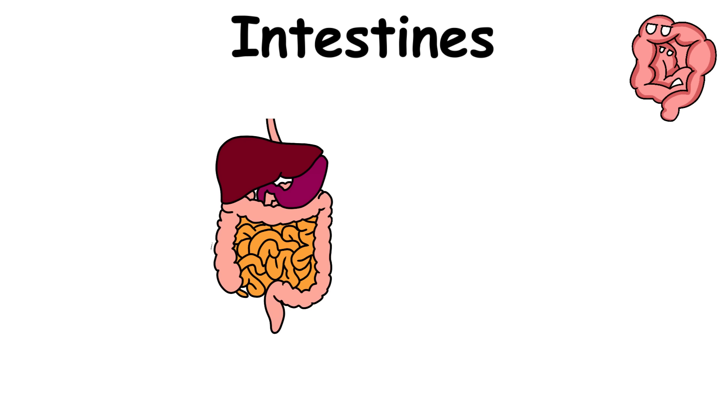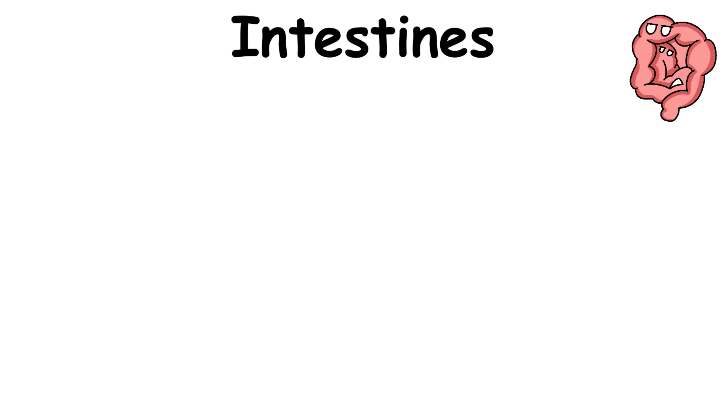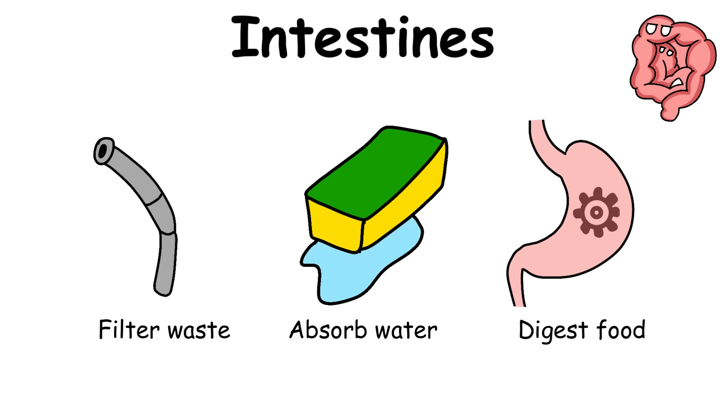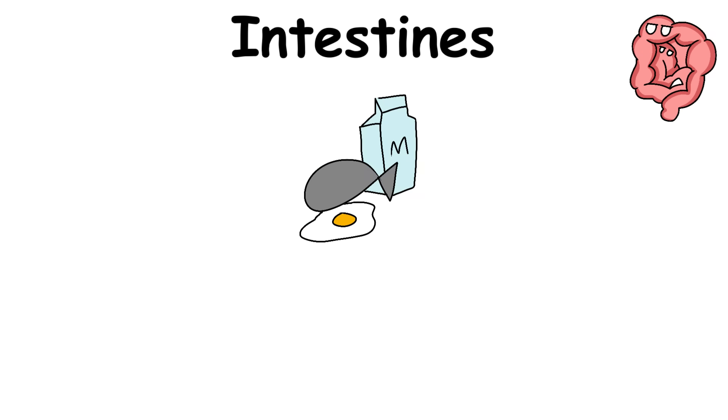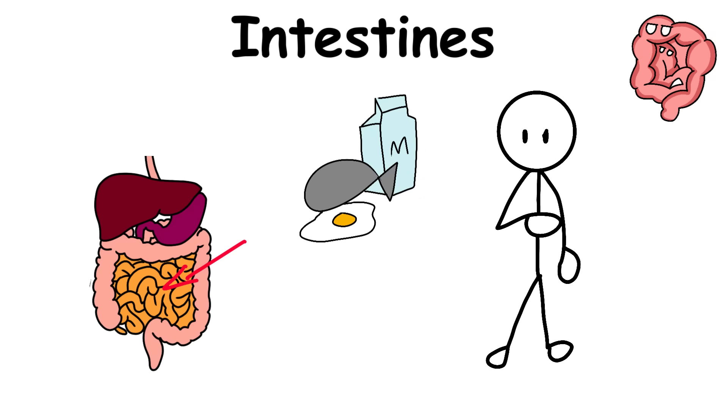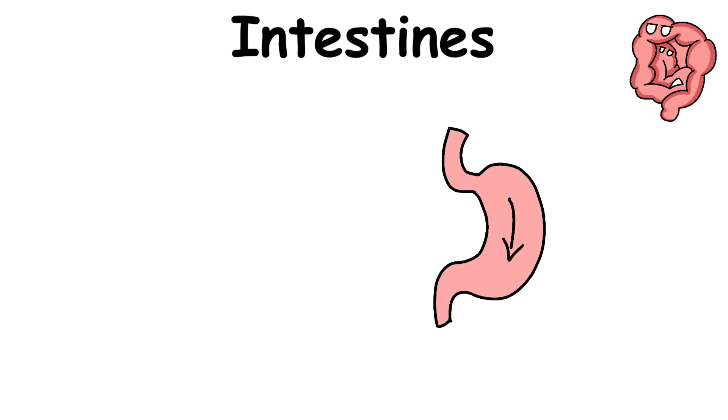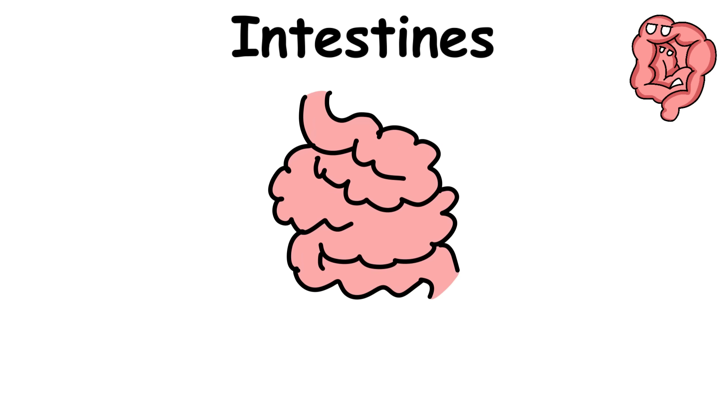The intestines comprise two different intestines: the small intestine and the large intestine. These organs are tubes that filter waste, absorb water, and digest food. Food that has already been partially digested passes through the small intestine. Contrary to popular belief, digestion and absorption of food don't mostly happen in the stomach. Instead, most of it happens in the small intestine.